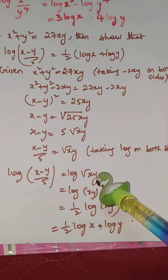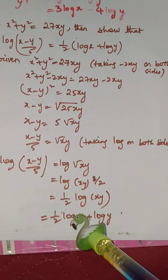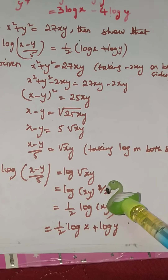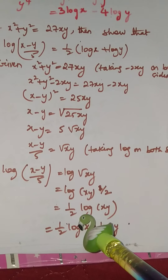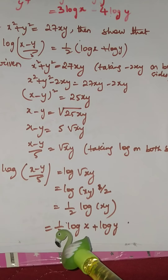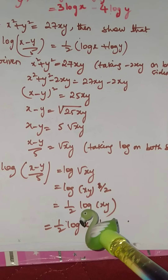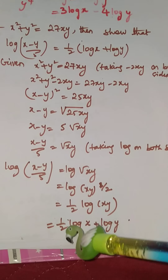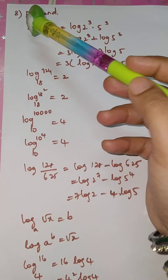We write log(√(xy)) = ½·log(xy). Using log(ab) = log a + log b, this becomes ½(log x + log y). Hence proved.